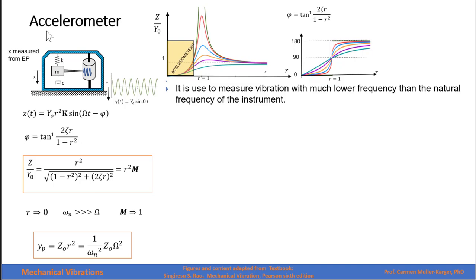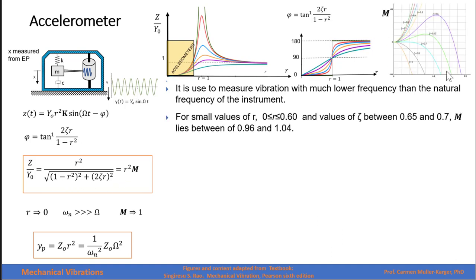Accelerometers are used to measure much lower frequencies than the natural frequency of the instrument, so we are placed where r tends to zero and M tends to one. As you see in this enlarged graph of M for small values of r — from 0 to 0.6, and values of zeta between 0.65 and 0.7 — for those ranges, the value of M lies between 0.96 and 1.04. So the error in assuming M equals one will be much smaller.